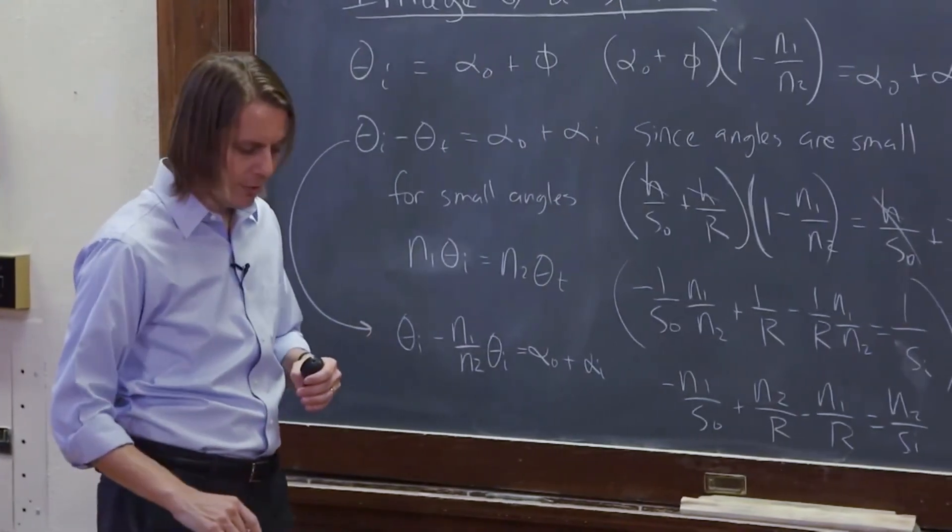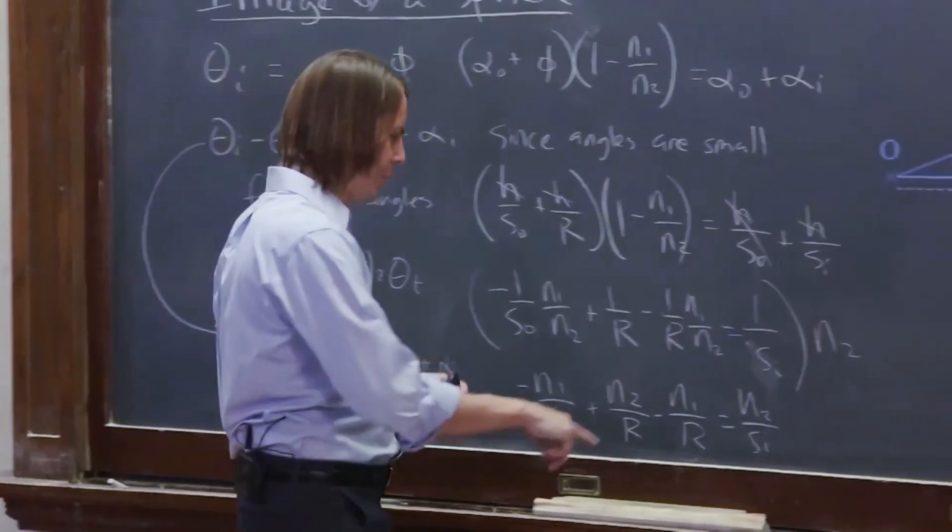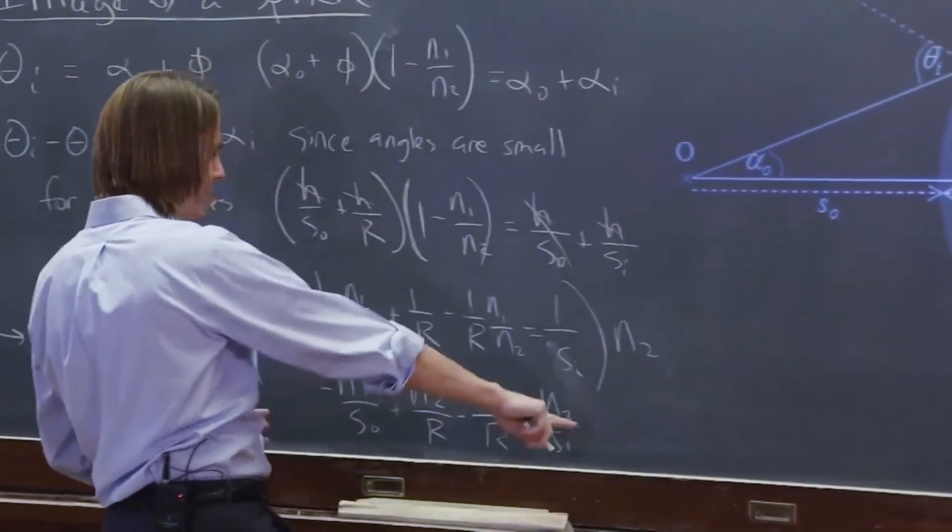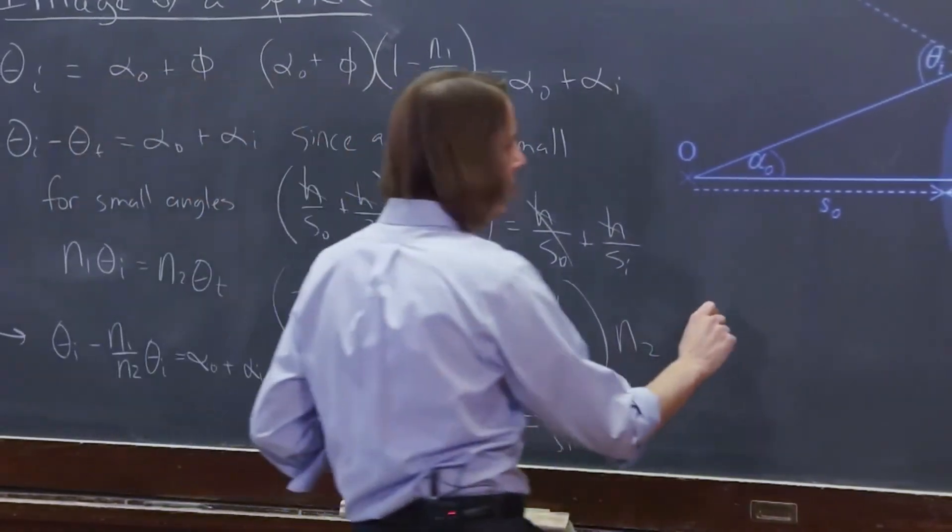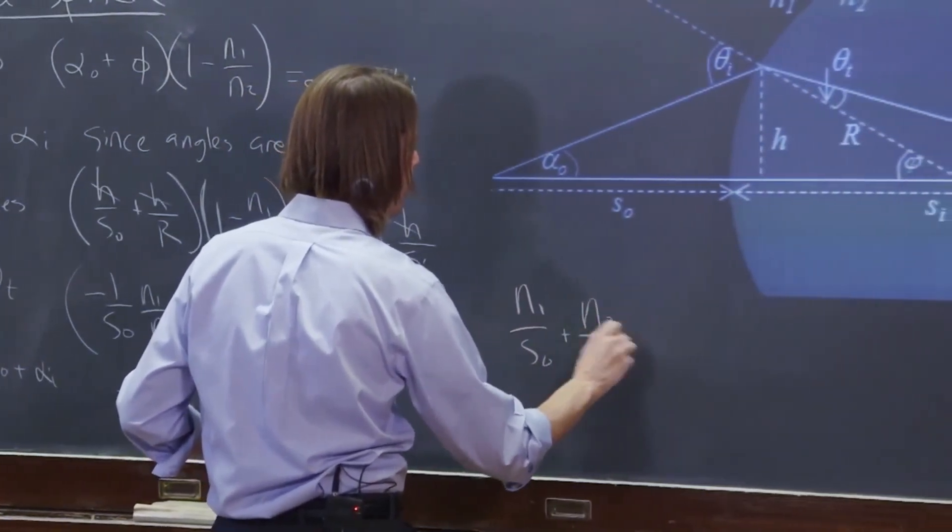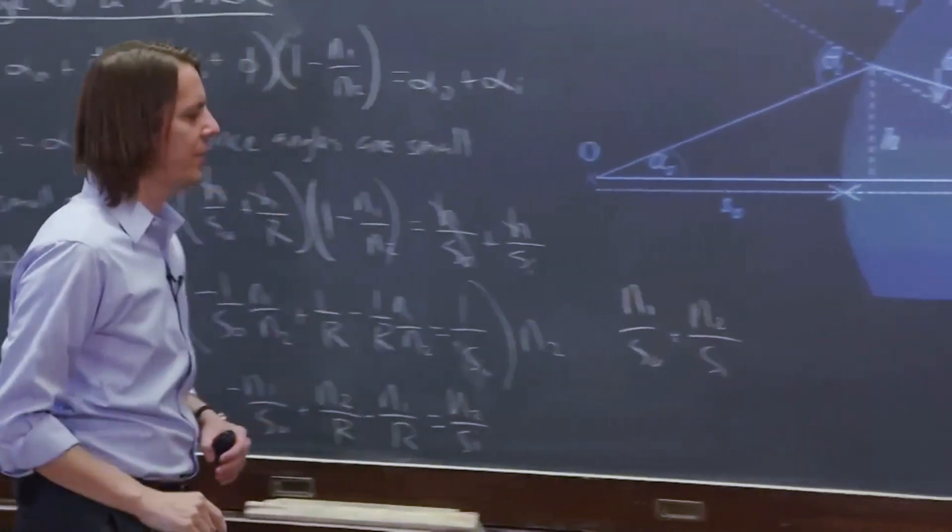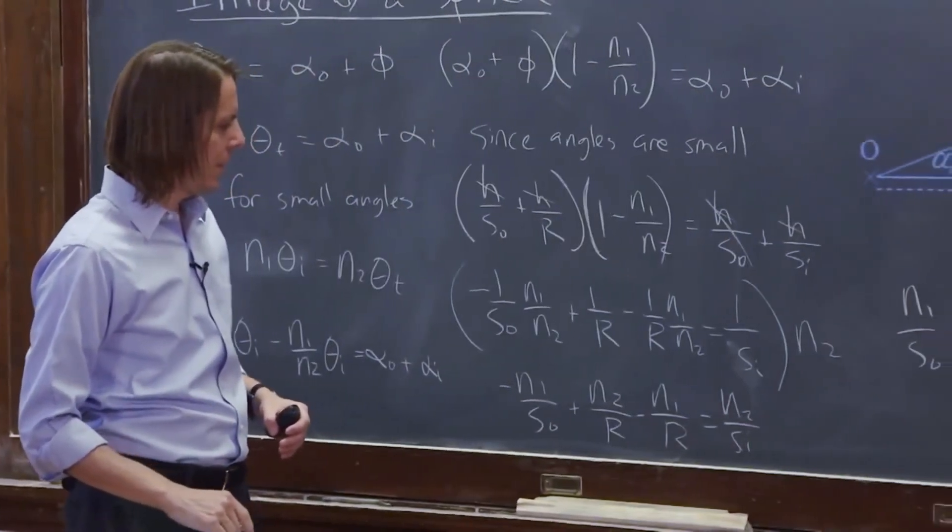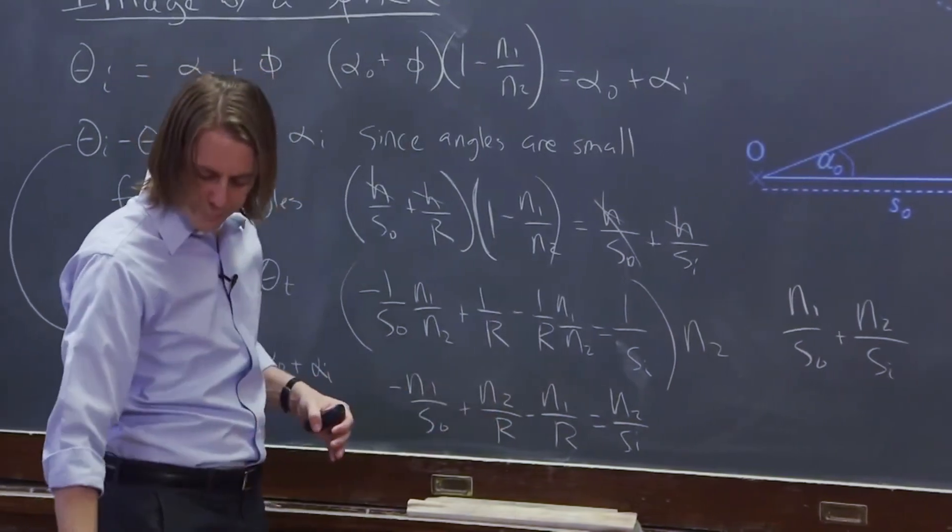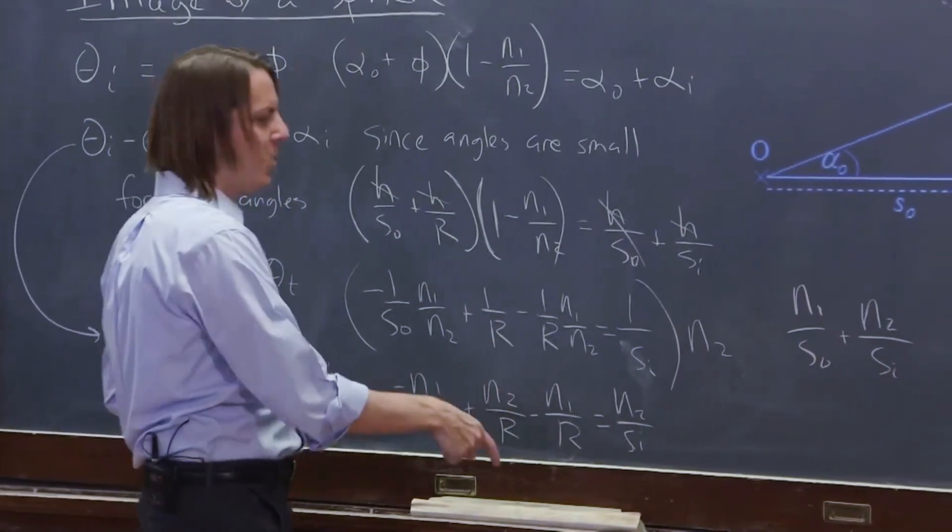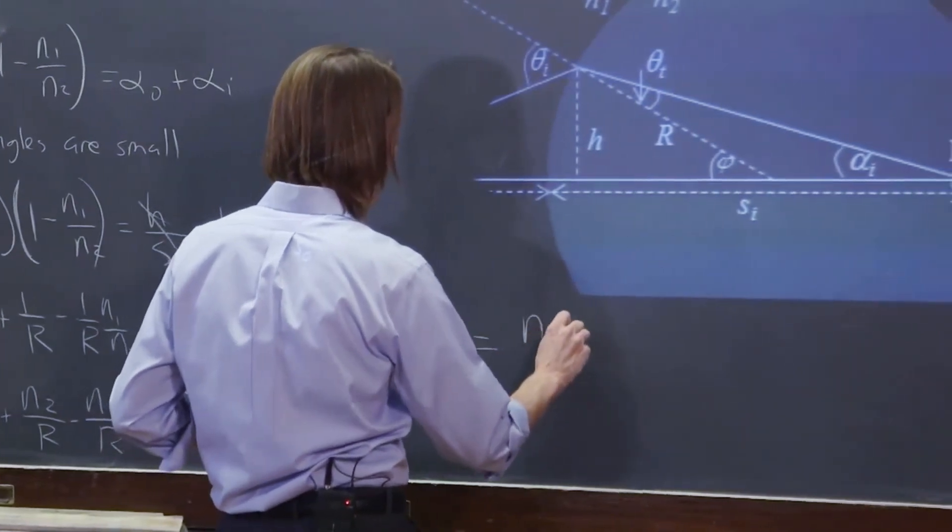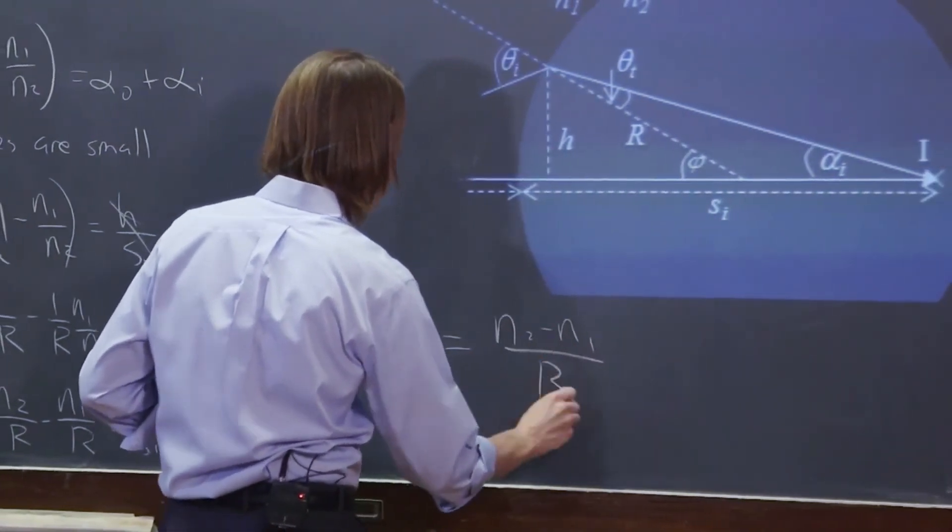That's what we wanted to do. And then we bring it over here and then we pull these things over here. And we get this to this side. We get N1 over S naught plus N2 over SI equals, and then these two are left over 1 over R times N2 minus N1. N2 minus N1 over R.